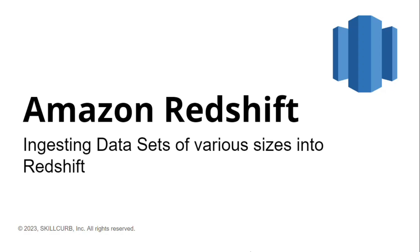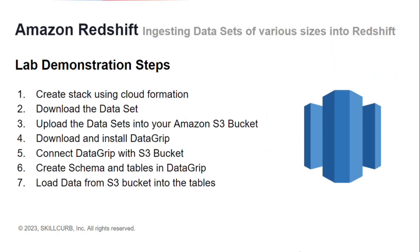Hi, I am Eliza Tanbir from Skill Curve. In this video, you will learn how to ingest datasets of various sizes into Redshift. We will first create a stack using CloudFormation, then download and upload datasets into the Amazon S3 bucket, download and install DataGrip, connect DataGrip with our S3 bucket, create schemas and tables, and finally load the data from S3 into the table.